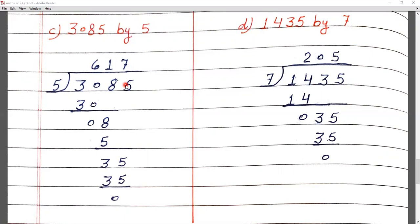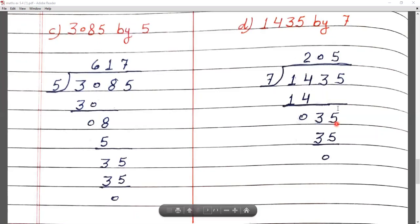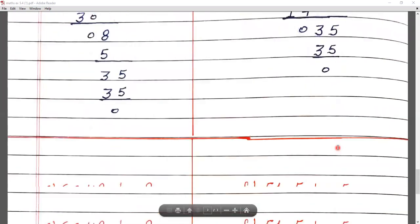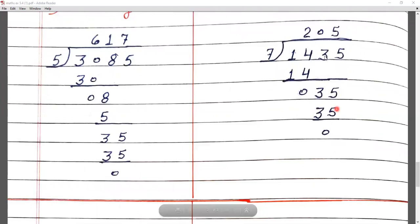Question D: 1435 by 7. We use the 7 times table. Since 1 is smaller than 7, we make a pair: 14. 7 twos are 14. 14 minus 14 is 0. Bring down next digit 3. Since 3 is smaller than 7, we write 0 above and bring down the next digit, making 35. 7 fives are 35. 35 minus 35 is 0. The answer is 205.